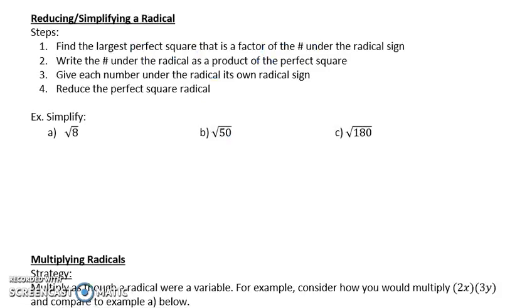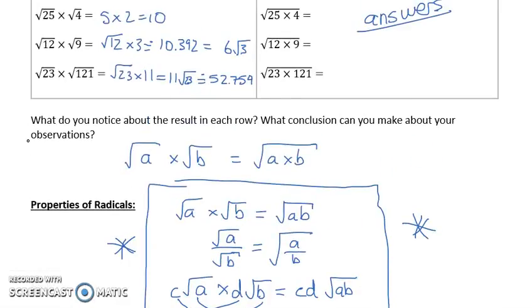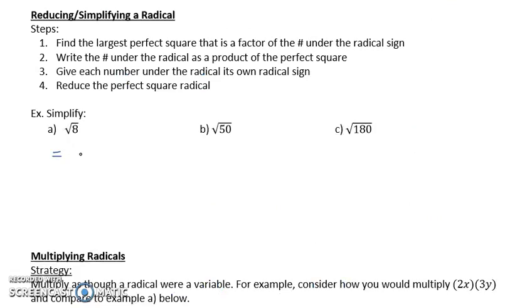Now, the first thing we want to do is reduce or simplify a radical. And that has to do with just a single radical. And the steps we're going to do are shown above. I'm going to walk you through those steps. If you want to pause and read those over, you can. But I think you're going to catch on fairly quickly. So, for root 8, what I can do is I want to find the largest perfect square that is a factor of the number under the radical. Well, the largest perfect square would be 4.